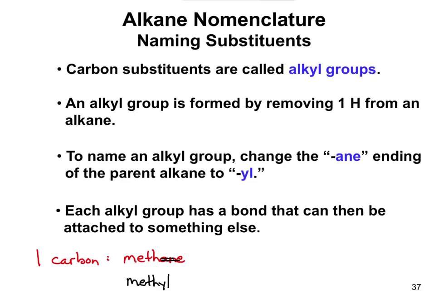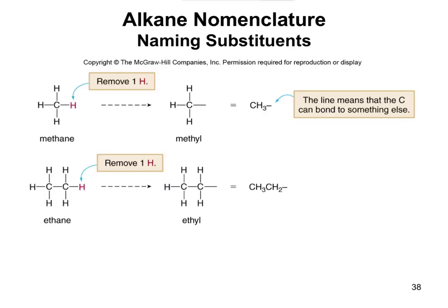An alkyl group is formed by removing one hydrogen from an alkane. In methane, all four carbon bonds are with hydrogen. By removing one hydrogen, you free up a bond for the carbon to connect to the parent chain. The same applies for an ethyl group - you free up a spot for it to bond to something else. That's why we say we remove a hydrogen for it to become a substituent.